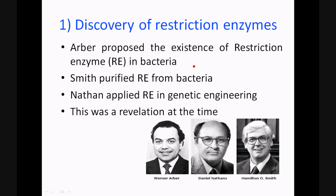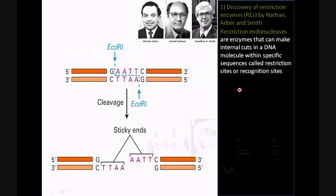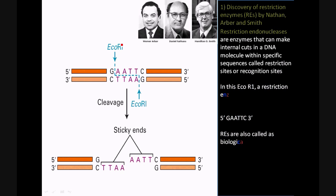The first discovery: the discovery of restriction enzymes. It was Arber who proposed the existence of restriction enzymes in E. coli. Later, Smith purified restriction enzymes in E. coli, and these were then applied in genetic engineering. Restriction enzymes are enzymes that can make internal cuts within specific sequences called restriction sequences or restriction sites.